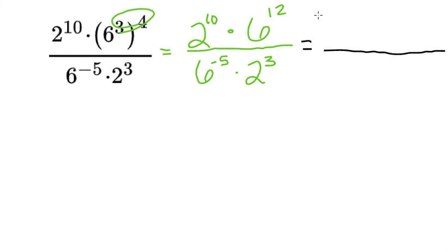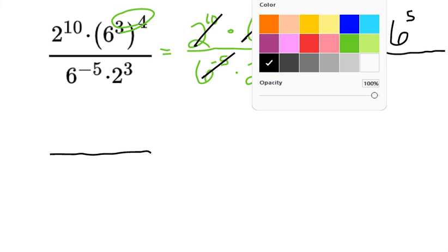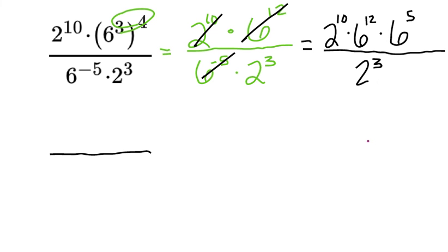That negative is something we need to deal with, so we're going to rewrite. We still have 2 to the power of 10 multiplied by 6 to the power of 12 — they're already positive and already in the numerator, so they stay where they are. But this 6 to the power of negative 5 needs to come to the numerator and become 6 to the power of positive 5. Then the 2 to the power of positive 3 stays in the denominator because it's already positive. Now I'm going to keep simplifying — with my 2s, I've got 2 to the power of 10 in the numerator and 2 to the power of 3 in the denominator.